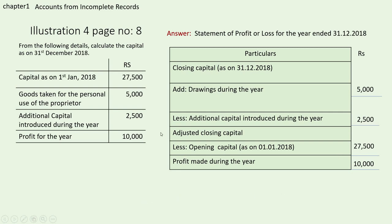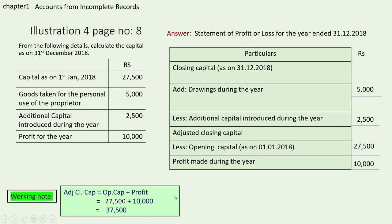We are asked to find the closing capital. First we find the adjusted closing capital using a simple formula: adjusted closing capital equals opening capital plus profit. Opening capital is 27,500 and profit is 10,000. So 27,500 plus 10,000 gives 37,500. This is your adjusted closing capital.